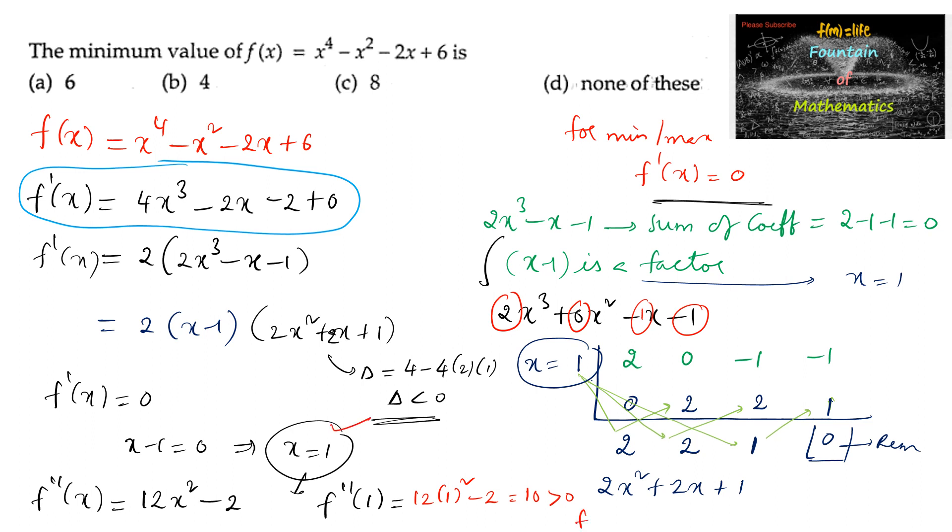Means f(x) is minimum at x is equal to 1. So we can substitute here to get the minimum value. f(1) is equal to 1 power 4 minus 1 squared minus 2 times 1 plus 6, that is 1 minus 1 minus 2 plus 6, which is equal to 4.